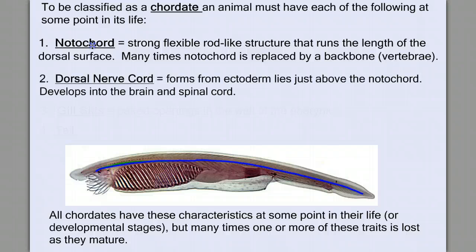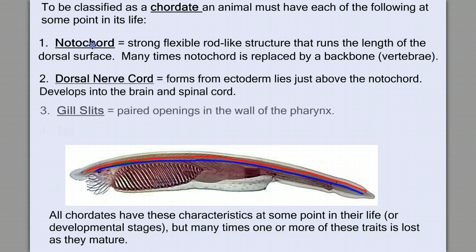A dorsal nerve chord — this is a nerve chord that forms from ectoderm, and it gives rise, eventually, to a brain and the spinal chord. Gill slits: paired openings in the walls of the pharynx, or the throat. This is where the gills are going to reside for gas exchange, and in some chordates it acts as a filter-feeding structure.